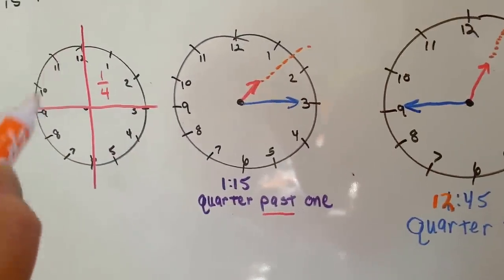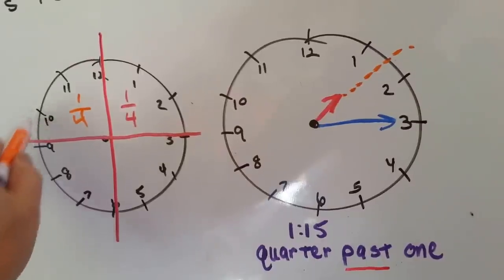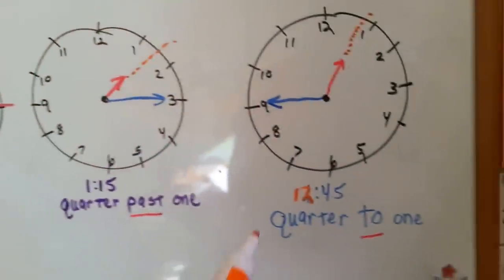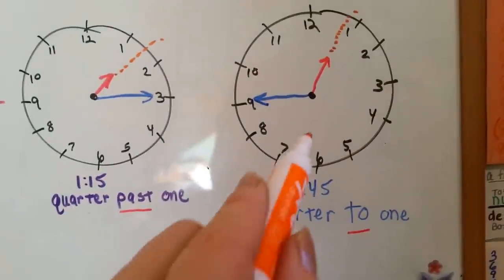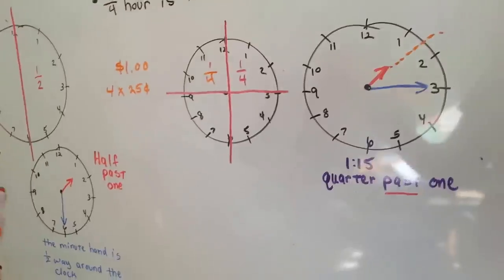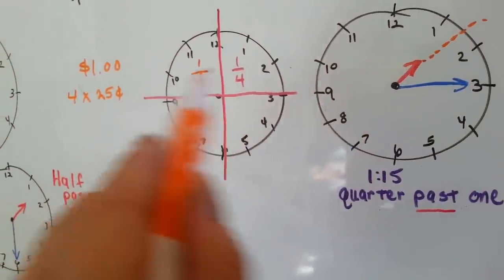Here's a fourth here. And if the minute hand is here, it's got one quarter of an hour until it hits the 12. Now, we never say two quarters past, remember? We always say half past, because one-fourth and one-fourth is equal to a half.